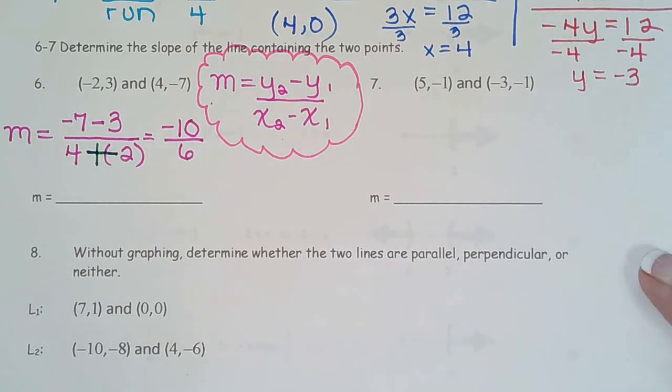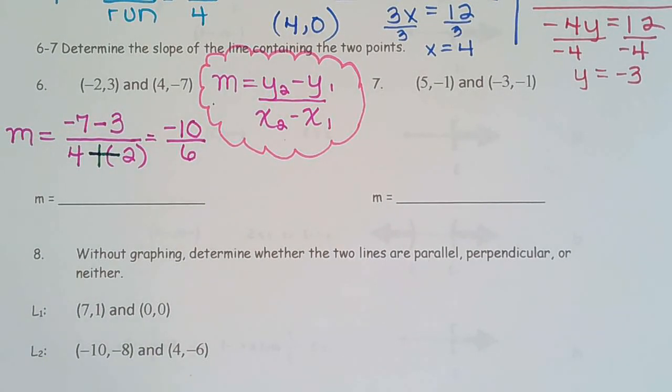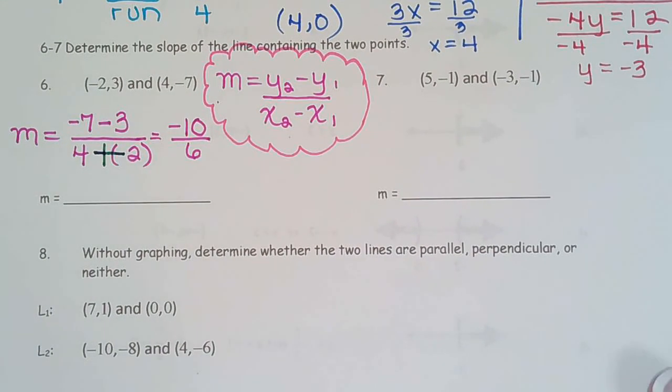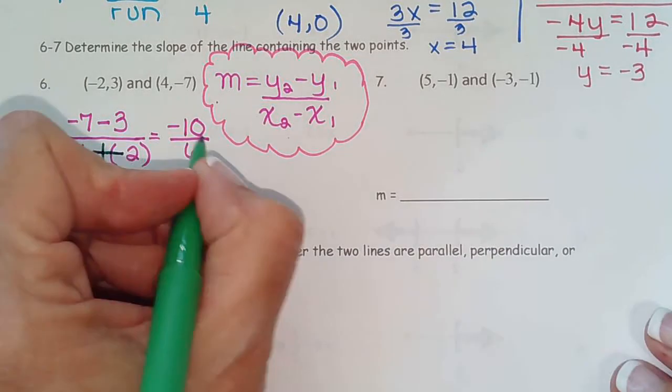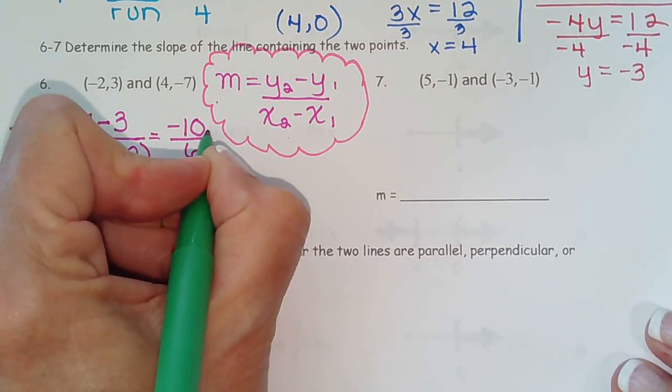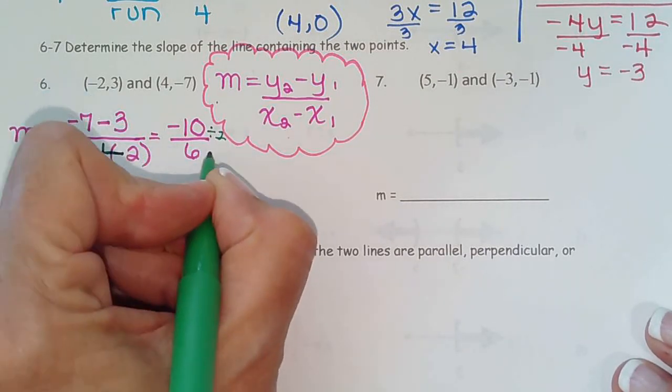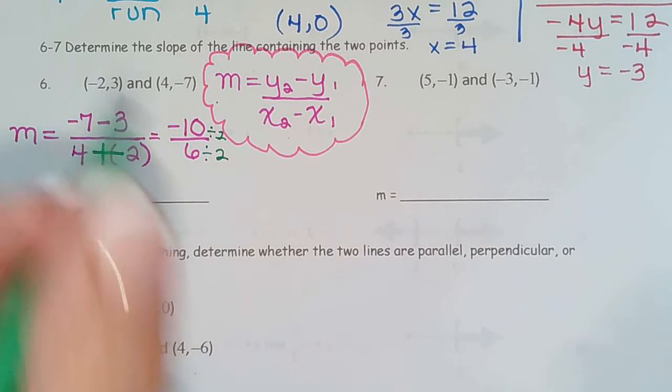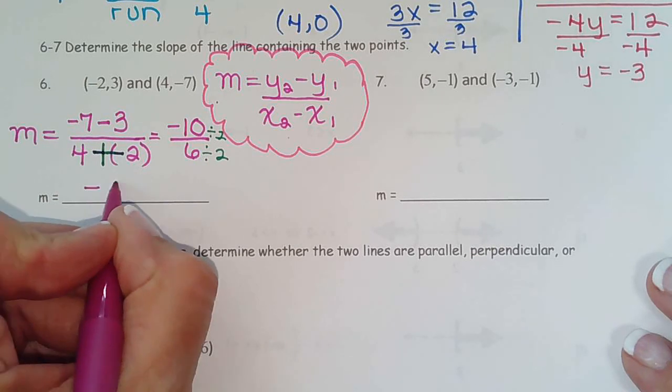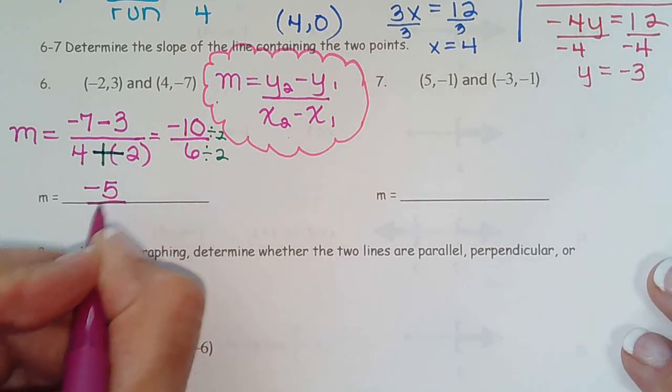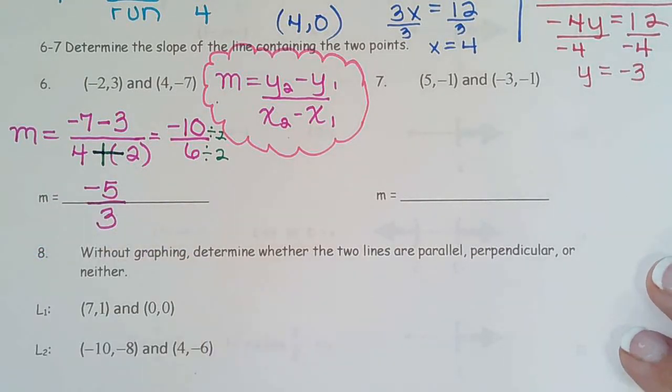And as I told you when we were learning slope, slope is a fraction. It needs to be simplified just like every other fraction to get full credit or to get any credit at all. So these are both even. That means they'll be divisible by 2. And that gives us m equals negative 5 over 3 for our answer.